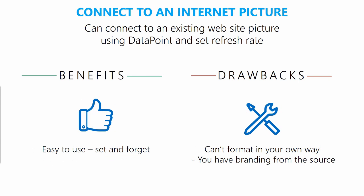Another option is just to connect to an internet picture. If there's somebody on the internet that's got a great website already updating in real time, you can just connect to that picture using DataPoint. This is great because it's easy — you just set and forget it — but the drawback is you can't format it in your own way. The branding is from the source, not your own branding.